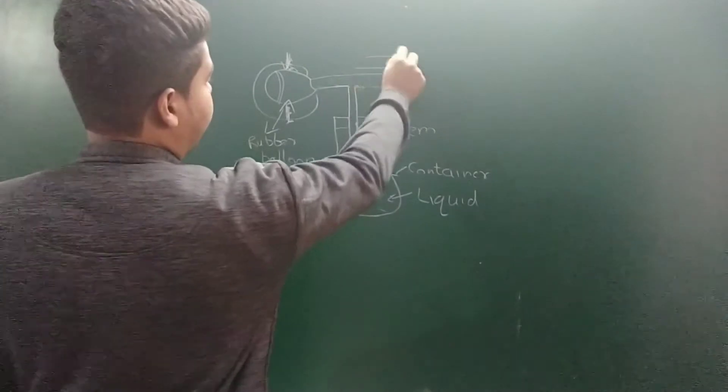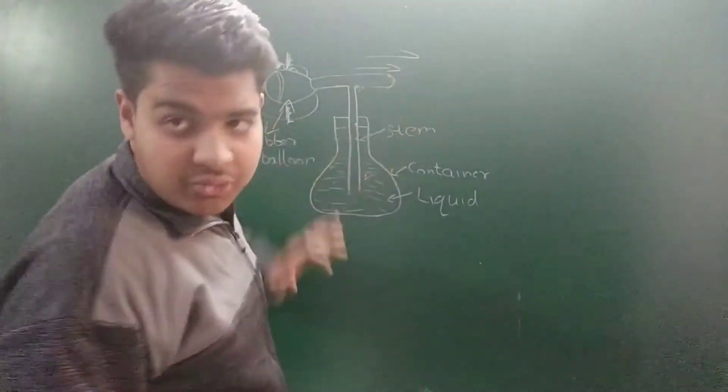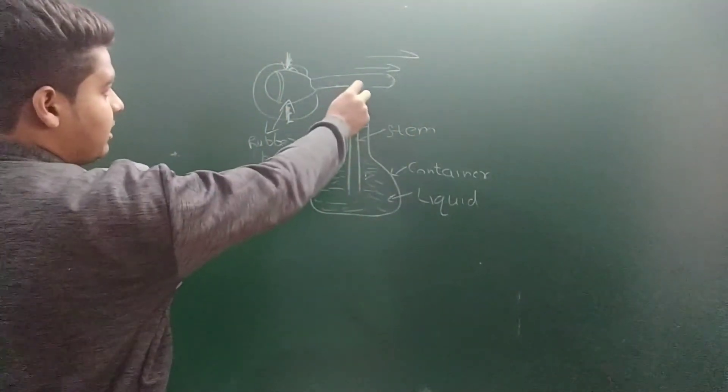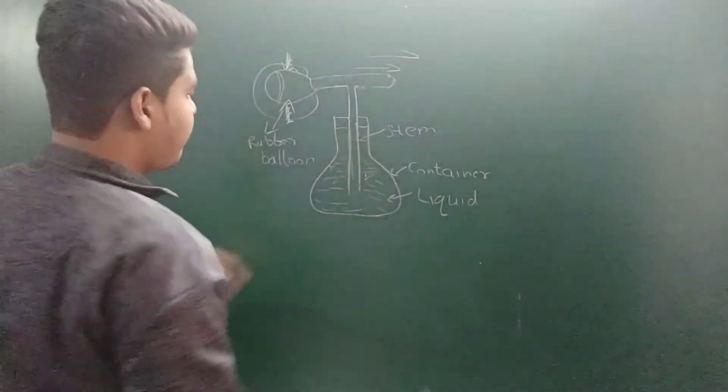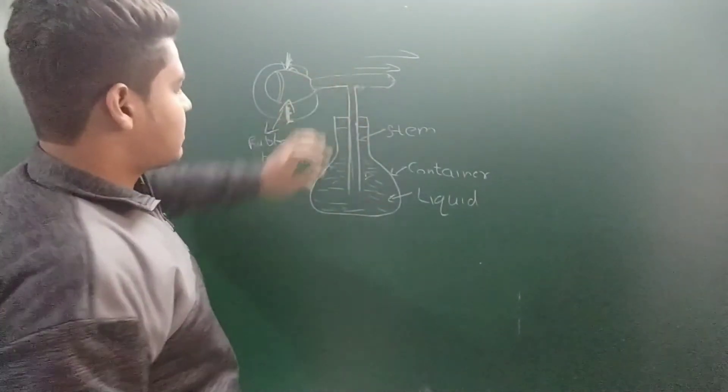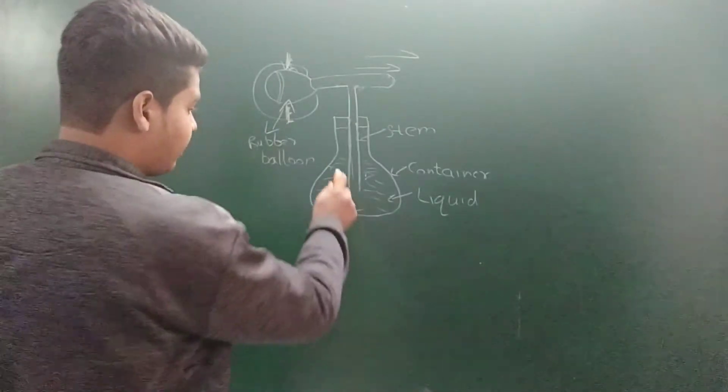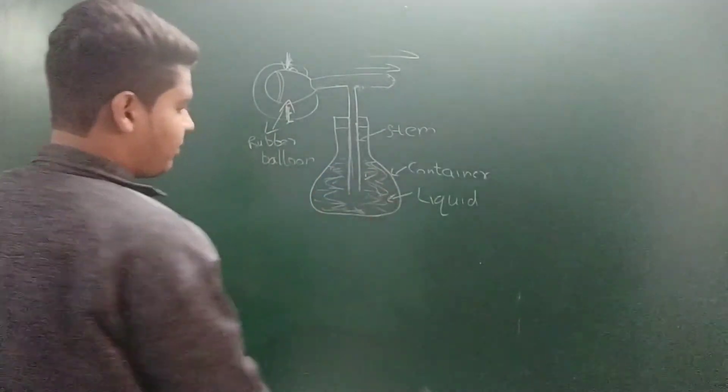When the air moves out, the pressure in this whole region - this part, the stem part, and this system - becomes low as compared to the pressure in the container, that is the pressure of the liquid. So the liquid tends to move upwards.